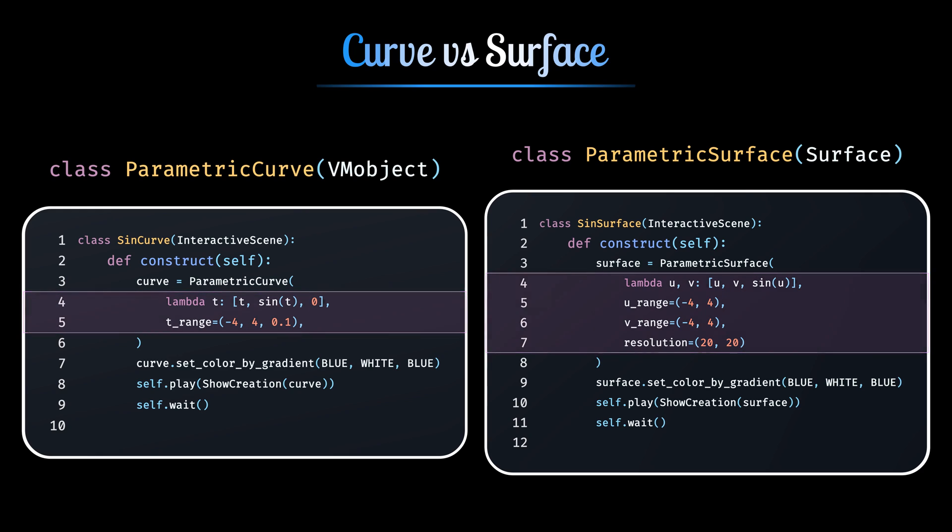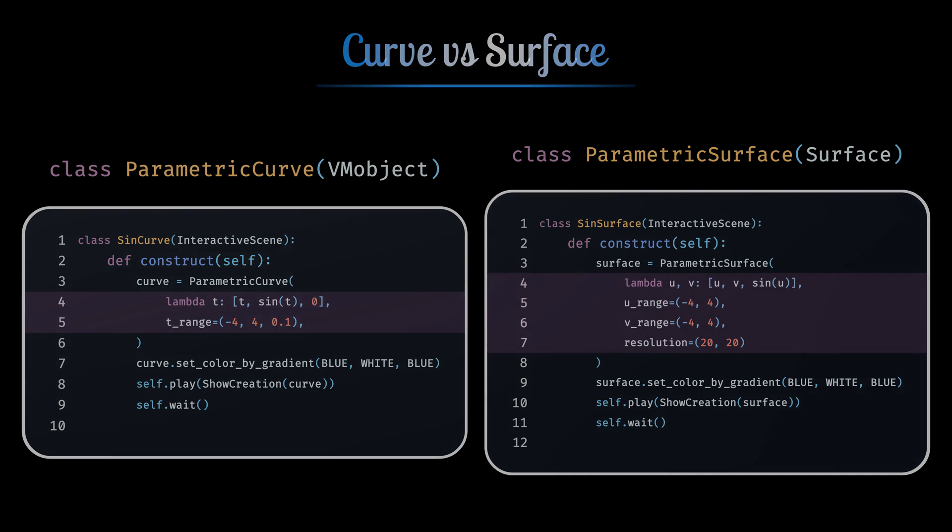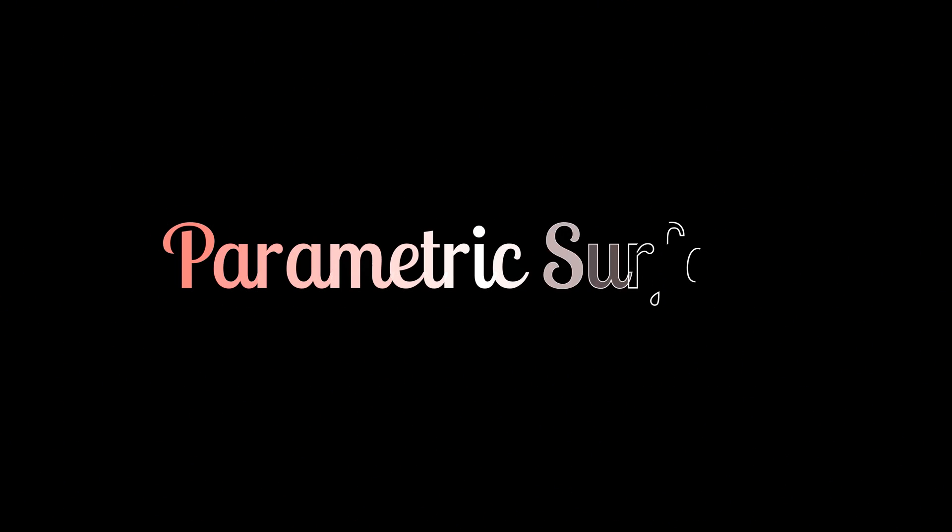You see, unlike Parametric Curve which requires only one parameter to generate a graph, in Parametric Surface we need two parameters U and V to generate any surface in the 3D space. In Parametric Curve, we set up the step size with the t-range parameter. While in Parametric Surface, we control it with the resolution parameter. The higher the resolution results in the smooth surfaces. Now, let's see how can we code this Parametric Surface.